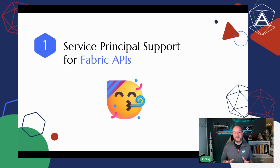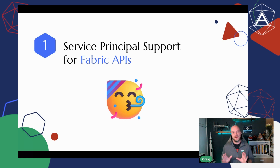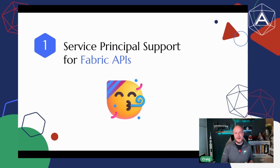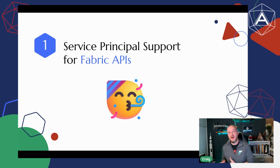Number one is service principal support for Fabric APIs. This might feel like a small one, but it is a huge one for automation — we can now automate API calls in Fabric securely. There was a huge cheer when this was announced to the MVP community. This is going to apply to your workspace management APIs, your capacity APIs, OneLake security and shortcut APIs, and any CRUD APIs as well.